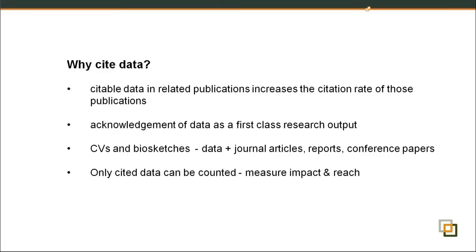The first question we're often asked is: why cite data in the first place? There are a number of reasons. The first probable reason is that now you can cite data — in the past, this just wasn't possible. Now data, because it's citable and persistently available, is being seen as part of the scholarly record. Don't worry if I go through too quickly, as this is being recorded and the recording will be released after the session.